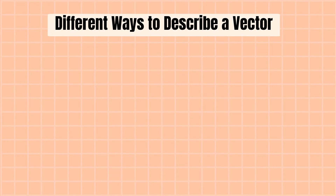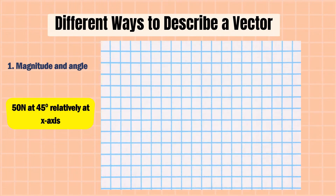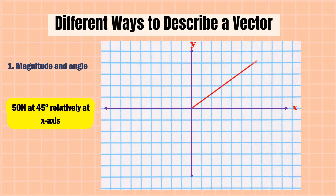Different ways to describe a vector. Number one: magnitude and angle. For example, 15 newtons at 45 degrees relative to the x-axis. We're going to draw it in our graph — these are the x and y coordinates. So this is the vector force with 15 newtons and an angle of 45 degrees.